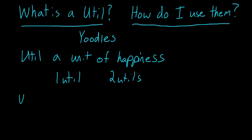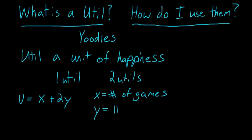These are functions where we say u, my utility, is equal to, for example, x plus 2y. Where x and y represent some goods that I consume that give me happiness. So, in this case, x could be equal to the number of games that I play in a day, and y could be equal to the number of hot dogs that I eat.